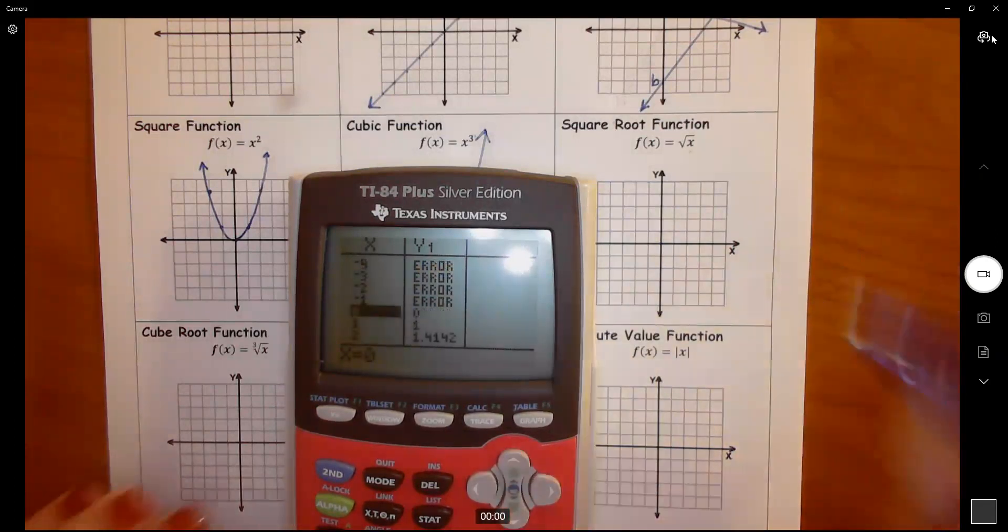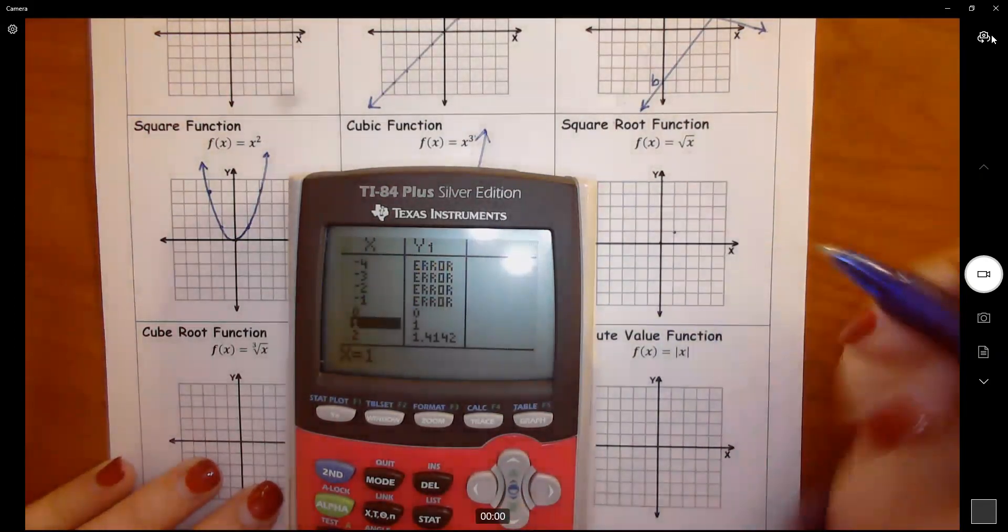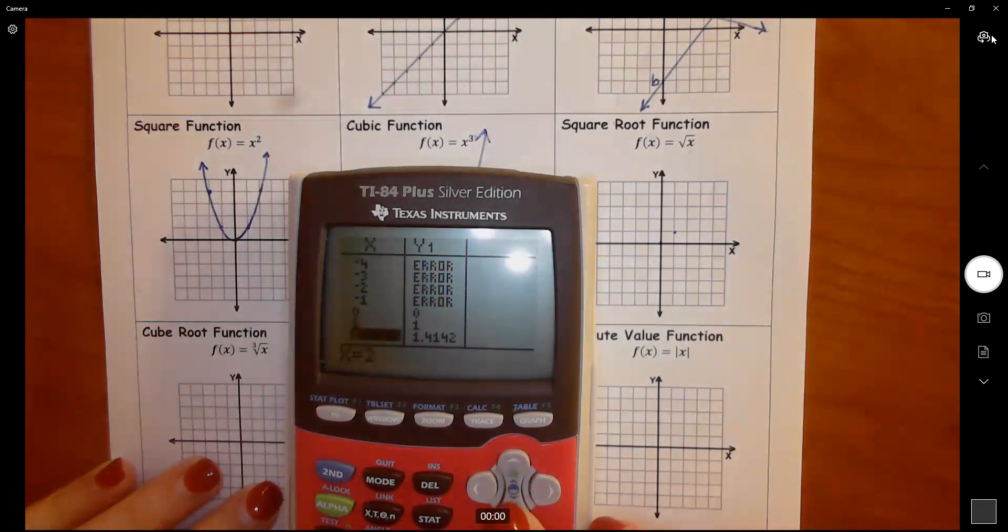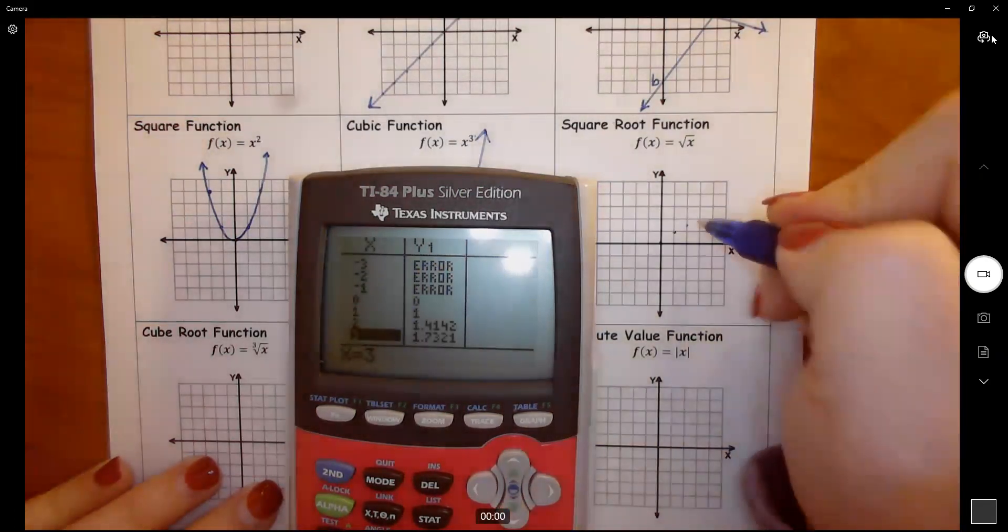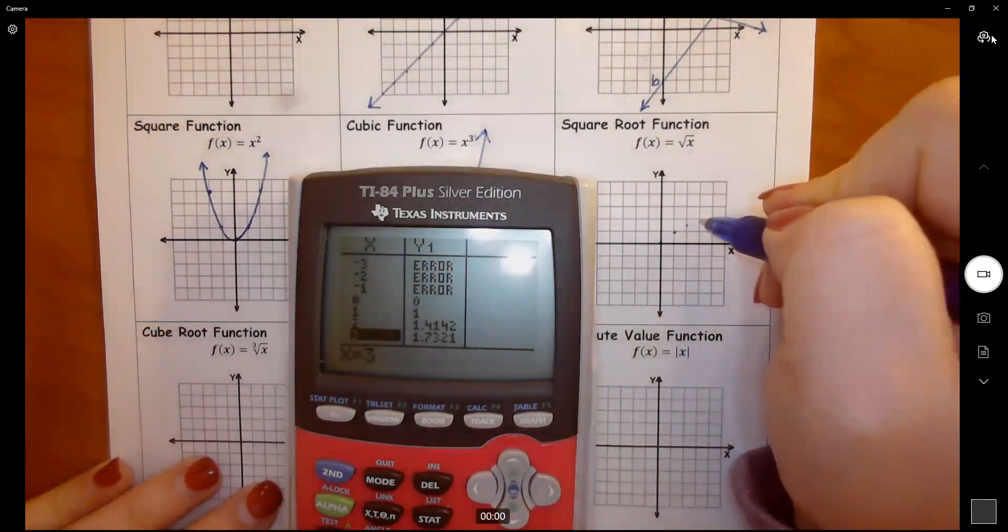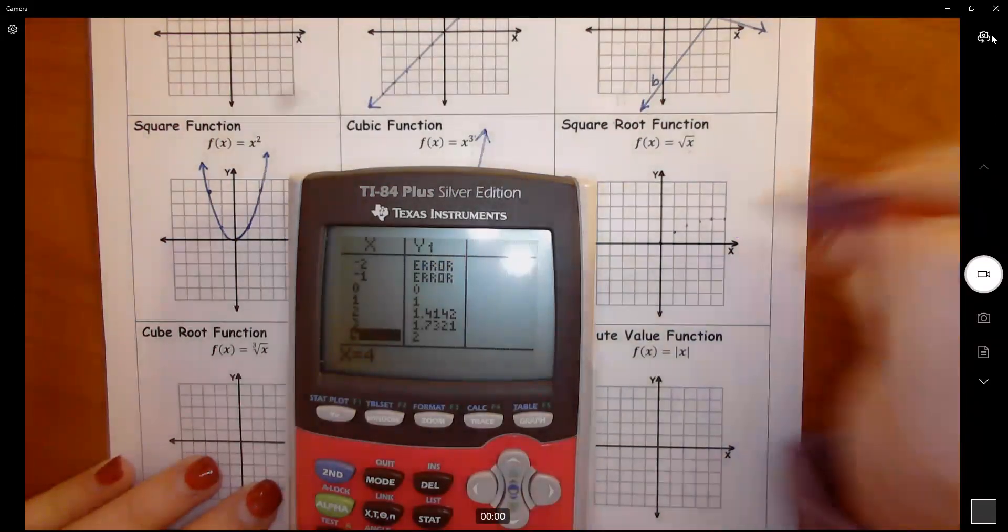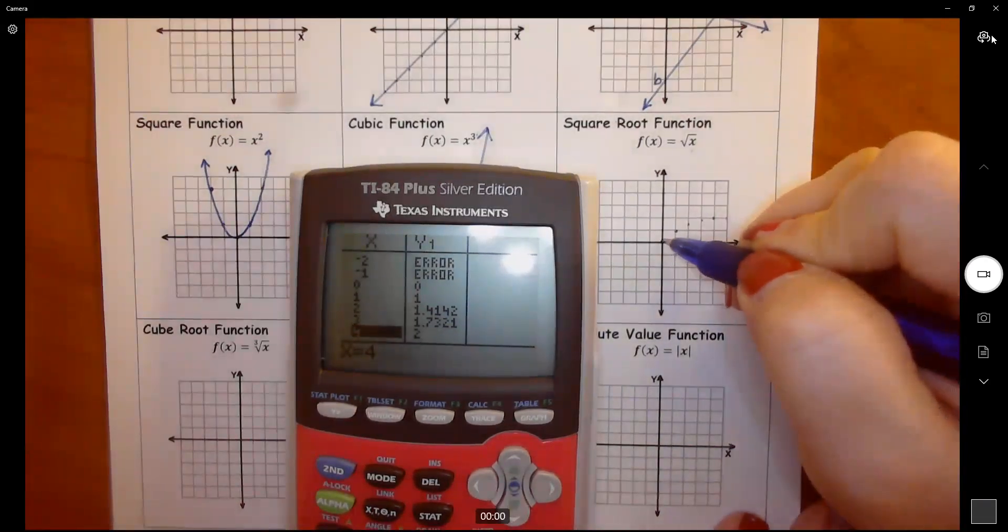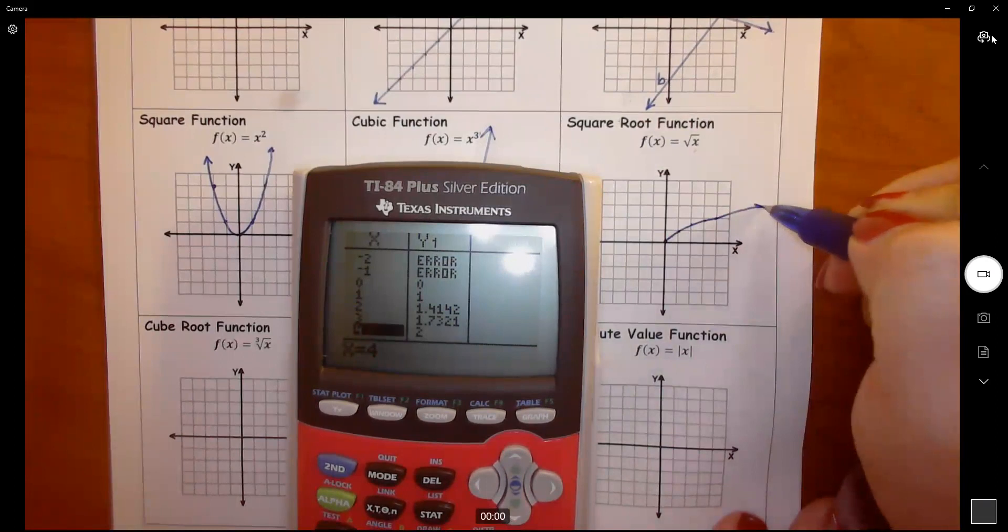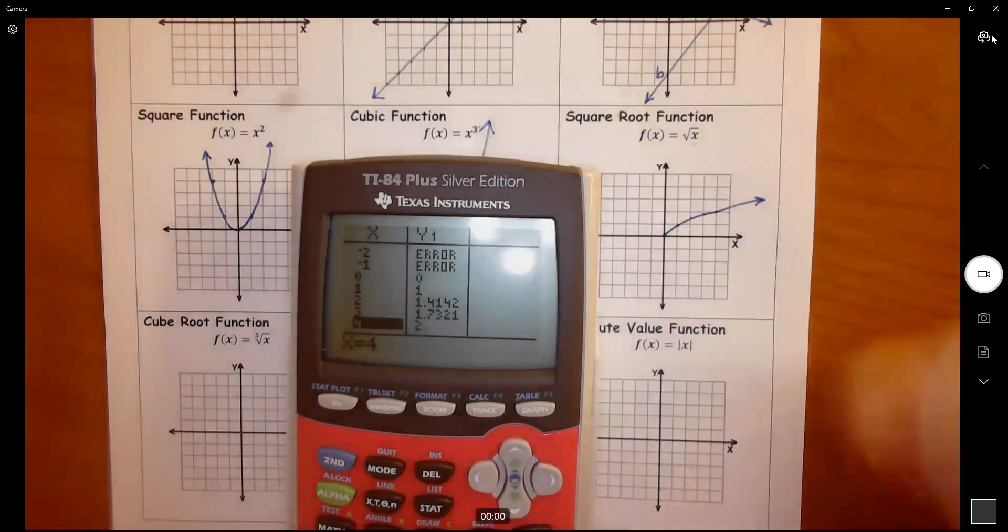So my graph starts at 0, 0. Then I get 1, 1. Then I get 2 and about 1 and a half. 3 and almost 2. And then 4, 2. I always call this my eyebrow graph right here. Kind of looks like an eyebrow.